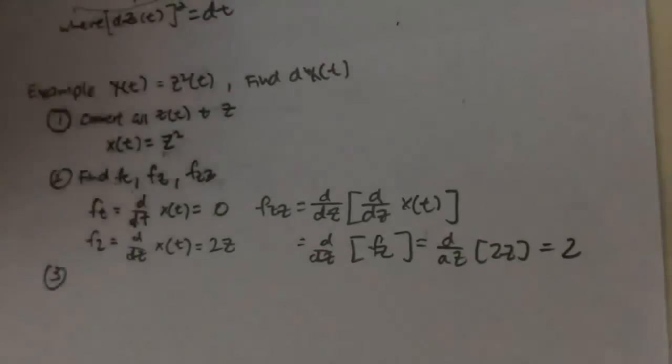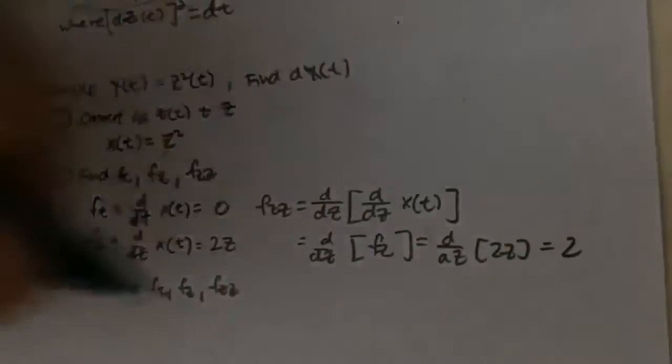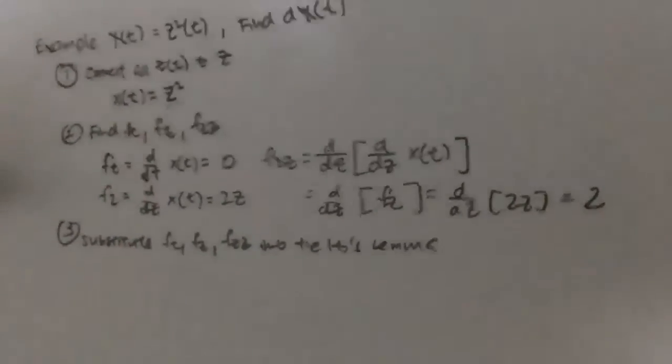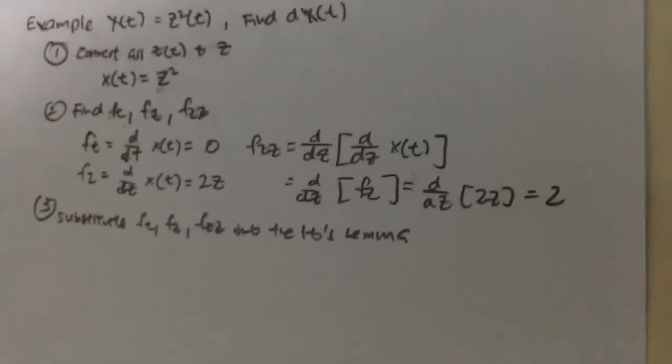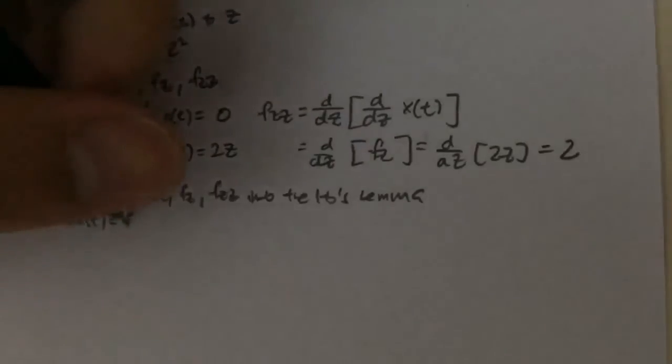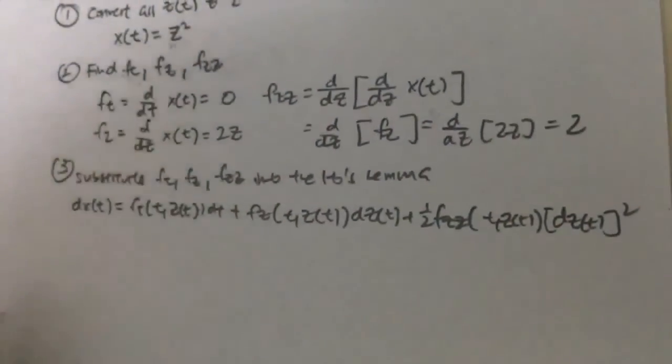So the next thing that you'll need to do is to substitute or to plug in your F_t, F_z, and your F_zz into the Ito's Lemma. So our Ito's Lemma is this on top. Let me just write down the Ito's Lemma here at the bottom. The Ito's Lemma is just basically this: dX(t) is equals to this whole function.